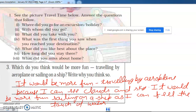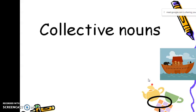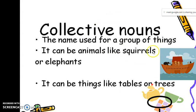Now we come to the collective nouns. As you see in the picture, collective nouns are the group of things collected at one place. The name is used for a group of things. It can be animals like squirrels or elephants, it can be things like tables or trees.